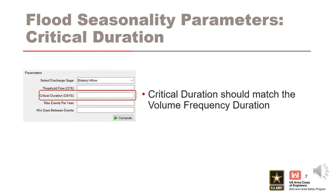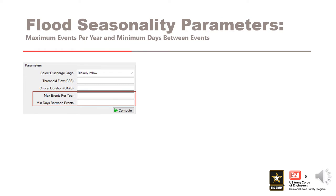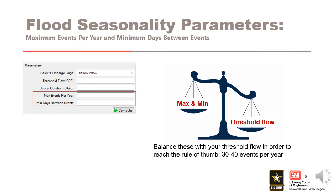The next input needed is critical duration. This should correspond to the critical duration for the inflow volume frequency curve. The final inputs needed to run the analysis are the maximum events per year and the minimum days between events. These values should be estimated by inspecting your data. How many floods above the threshold occur in a typical year? How far apart do flood events need to be to consider them as being independent floods? You can also use a guess and check approach to balance these inputs with your threshold flow in order to come up with 30-40 events.